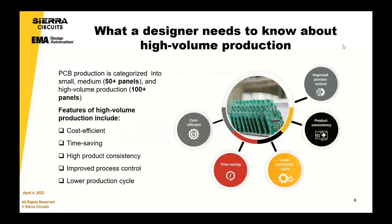So what does a designer need to know about high volume production? Within the circuit board industry, we have different types of manufacturing, and small, medium, and large volume means something different to different people. Within our organisation, we class small volume as sub 50 panels, a production panel being typically 18 by 24 inches in area. Anything between 50 and 100 panels we would class as medium, and anything above 100 panels we would class as high production for us.